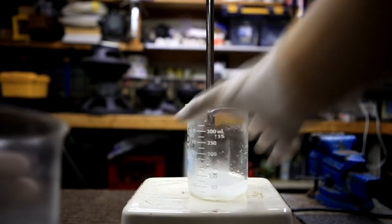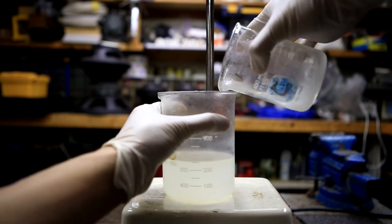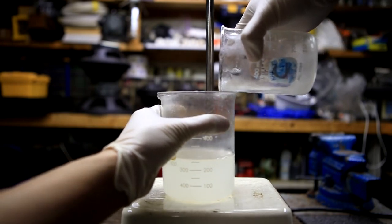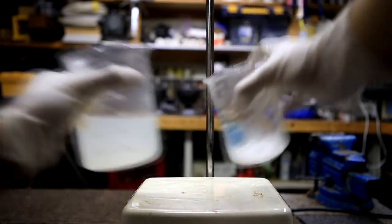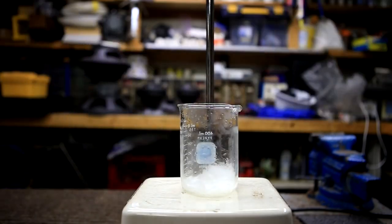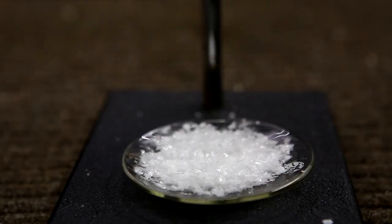You can stop at this point if you only desire moderately pure potassium chlorate. However, I decided to purify the crystals more and carry out a recrystallization. After recrystallization the final yield was about 15 grams of relatively pure potassium chlorate.